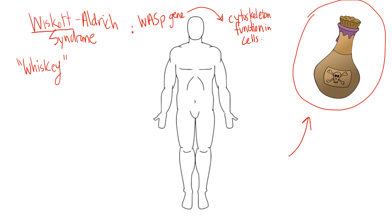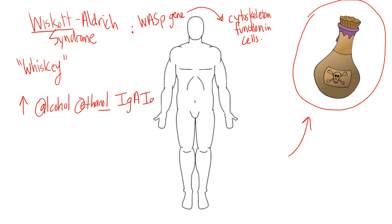When you drink whiskey, you're taking in alcohol — ethanol — so the 'ol' ending tells you that's an alcohol. We have 'A' and 'E': increasing alcohol and ethanol in the body. On a blood panel, IgA and IgE are increased. Then alcohol makes you sluggish and messes with your mentation — 'M' for mental — so IgM goes down.